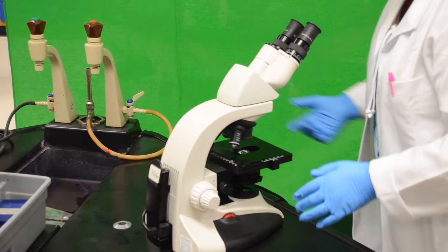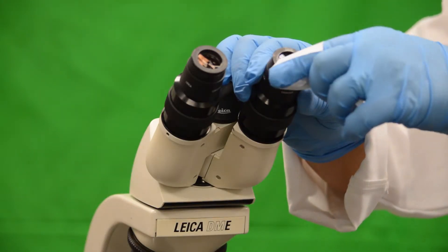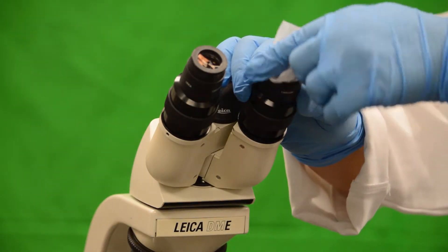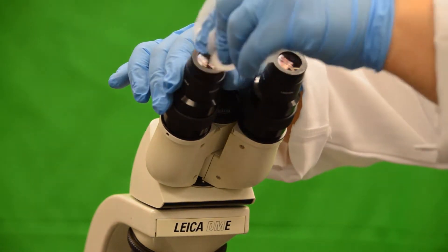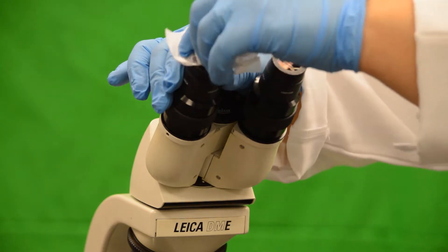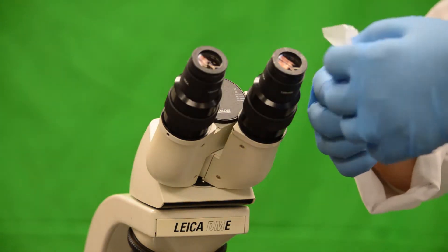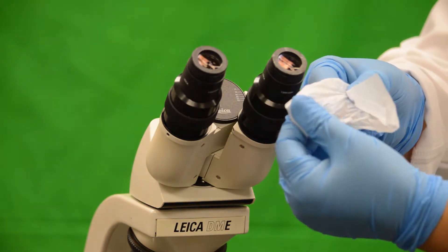Before using the scope and after use, clean all the lenses with lens paper and lens cleaner. Also, during use, clean the lens if there is a smudge, streak, or unevenness in the clarity of your image.